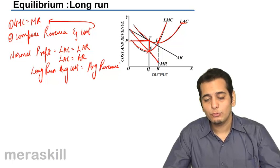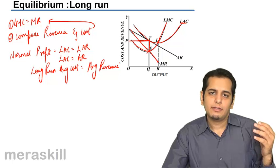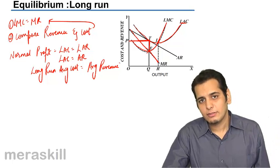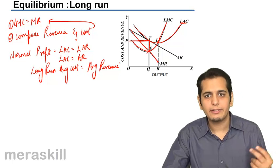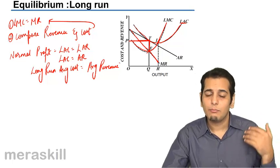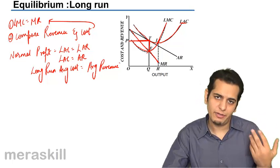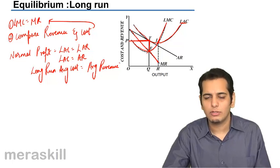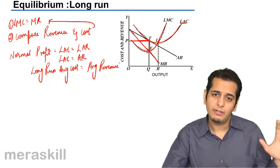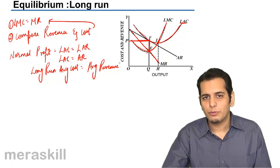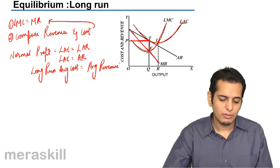So we have done three cases where AR is more than AC, we have a situation of supernormal profits. Second where AC is more than AR, when cost is more than revenue you have a situation of losses there. And finally we have seen where AC is equal to AR or LAC is equal to AR, there you have normal profit.